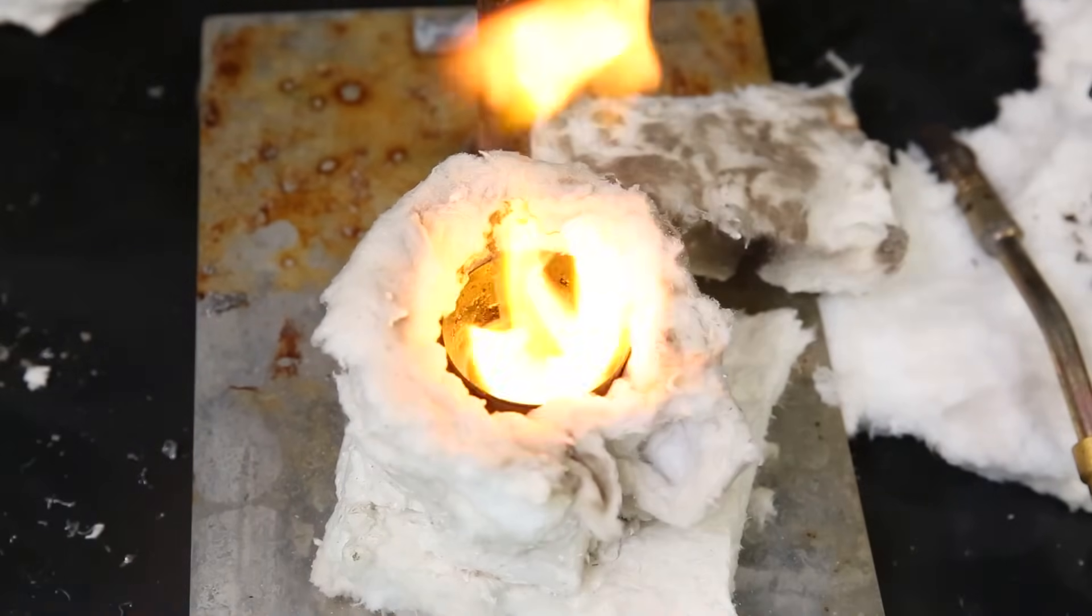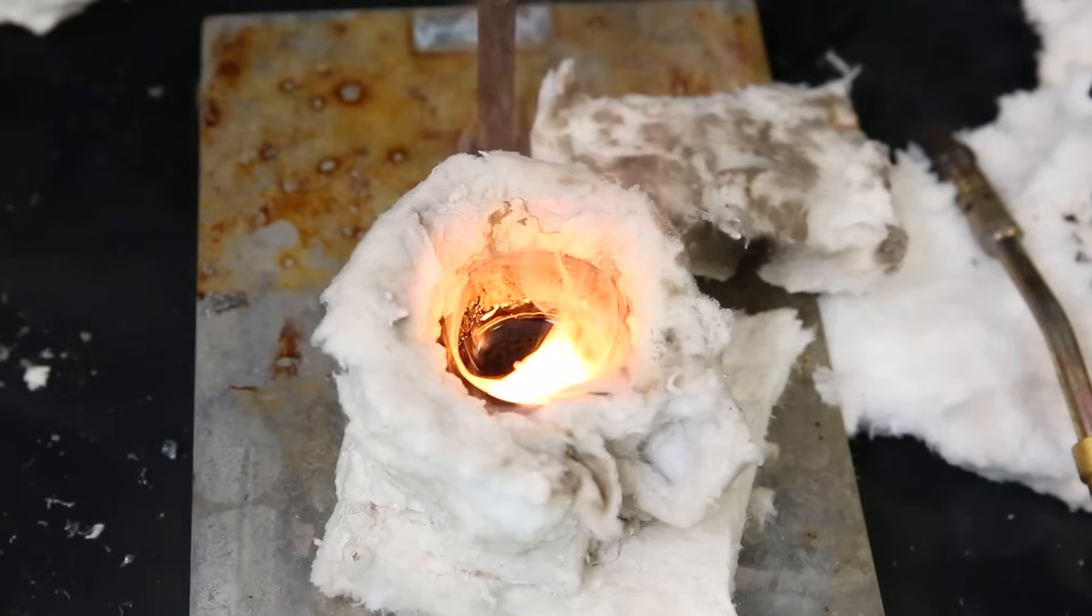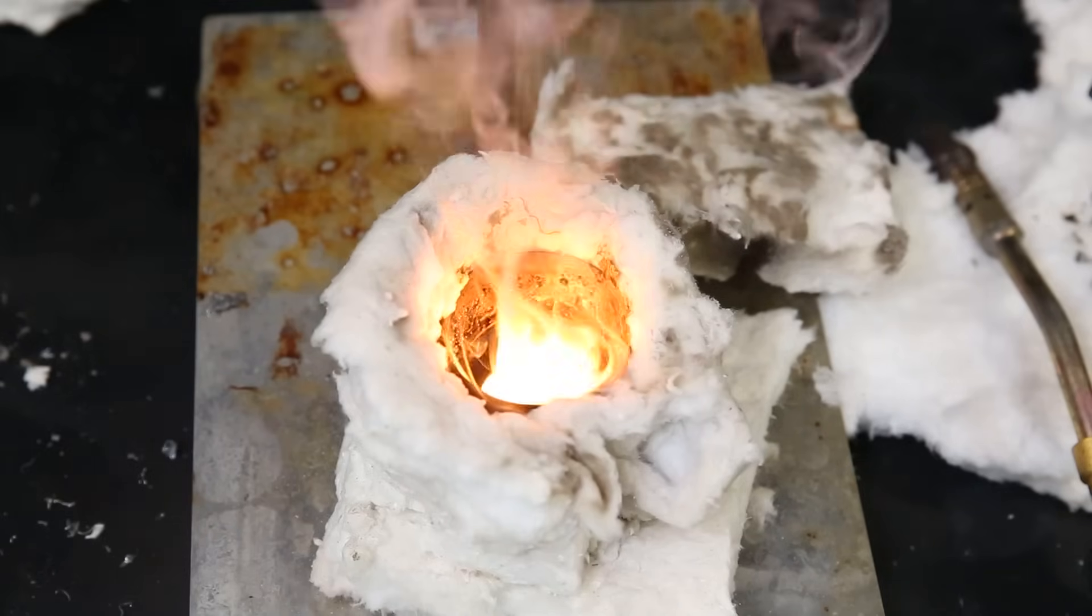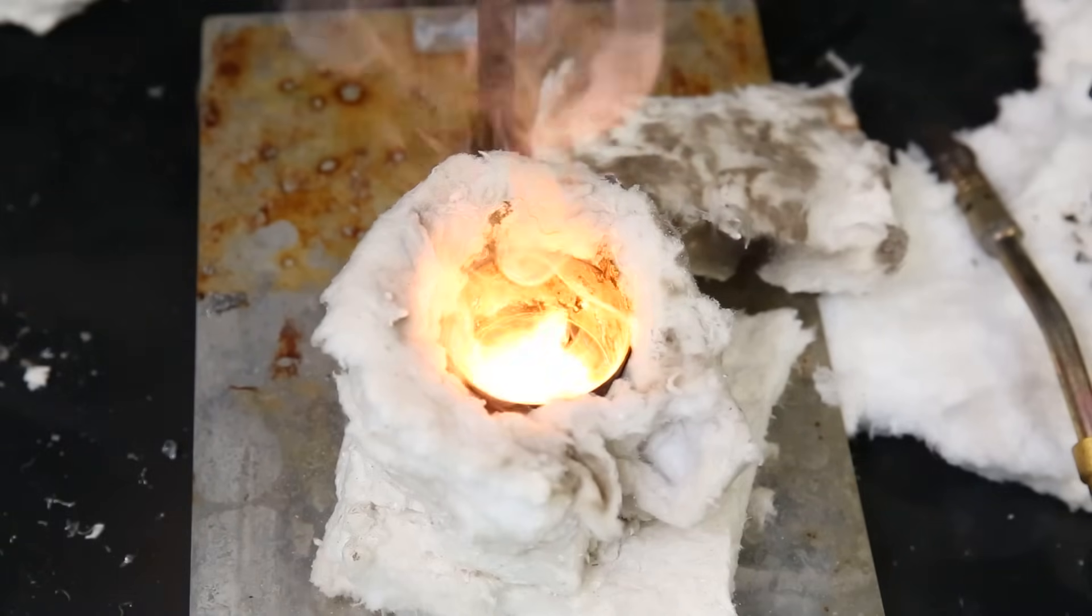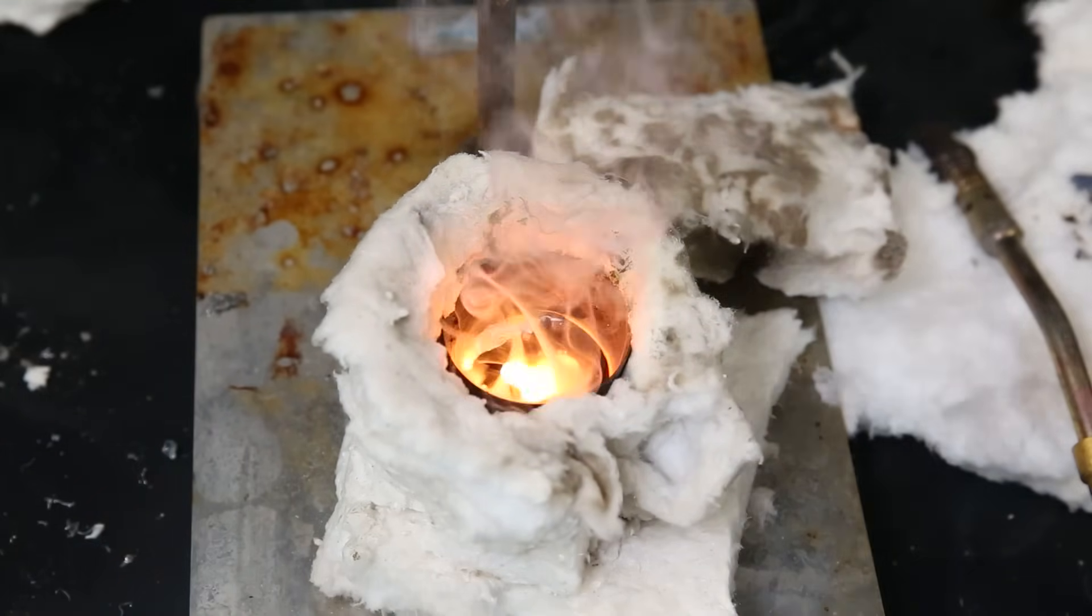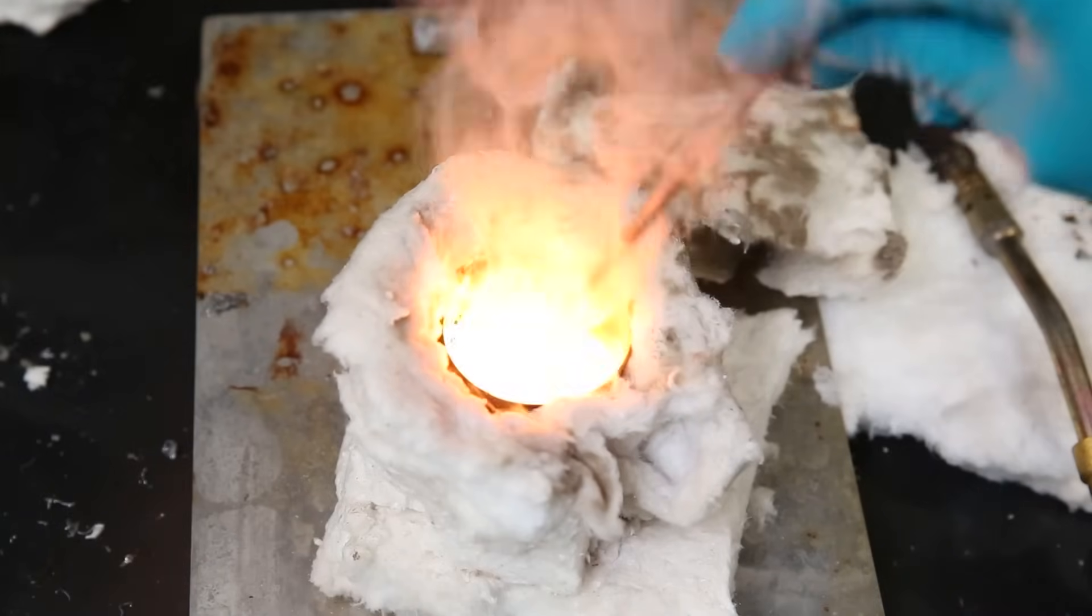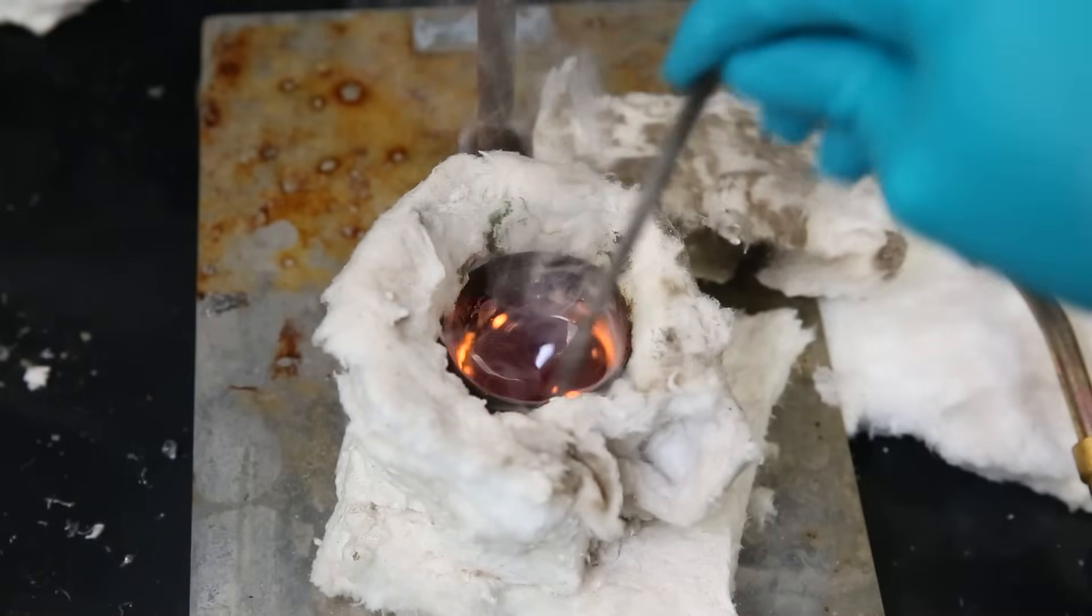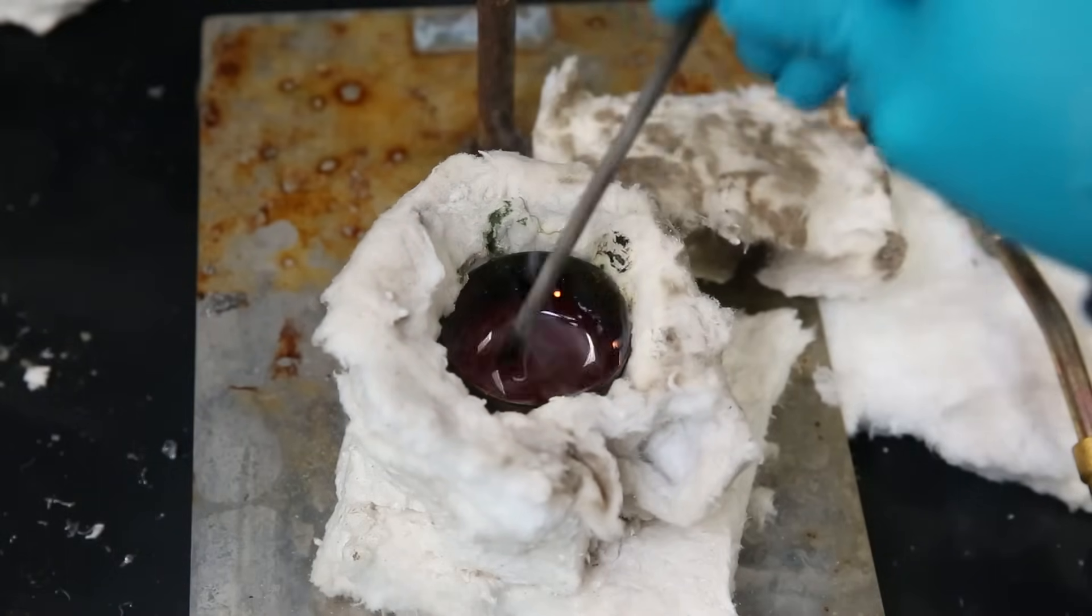When I add more sodium, it basically sits on top, partially ignites and covers itself with a layer of oxidation. To fix this issue, I use the spatula to force the sodium into the lead. Initially, the reaction becomes a bit more vigorous, but it quickly dies down as it dissolves into the lead and is no longer in contact with the air.